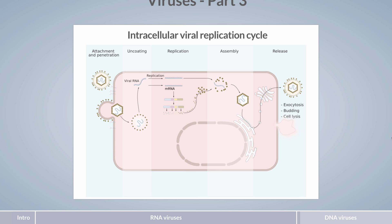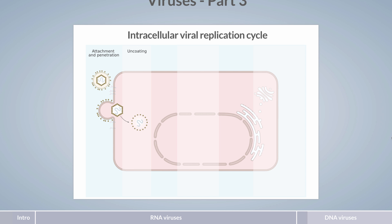Now let's take a look at DNA viruses. There are many similarities between the replication cycle of RNA and DNA viruses; however, there is one major difference. The genome of DNA viruses needs to be delivered into the host nucleus to take advantage of the cell's existing transcriptional machinery. Therefore, virion uncoating is accompanied or followed by nuclear import. Inside the nucleus, some viral DNA may initially require transformation into positive-sense, double-stranded DNA in order to be transcribed.